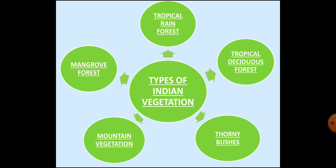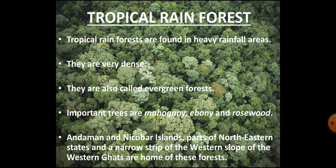Tropical rainforests are found in regions that are warm and receive heavy rainfall. These forests with several-meter-tall trees are so dense that very little sunlight reaches the ground. These forests have different species of trees that shed their leaves at different periods of the year, so they always appear to be green — this is the reason they are also called evergreen forests. The major species found in these forests are Ebony, Mahogany, Rosewood, Cinchona and Jamun. In India, the rainforests are found in the western slopes of the Western Ghats, Assam, Meghalaya, West Bengal, Odisha and the Andaman and Nicobar Islands.